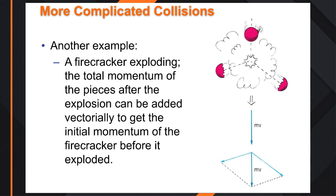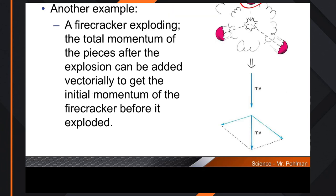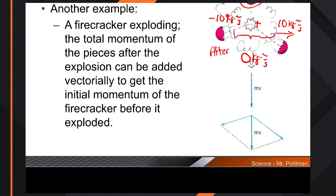Another example of conservation of momentum: instead of two things hitting each other, what if something explodes apart? If you have a firecracker, what's the momentum before it blows up? Zero kilogram-meters per second. And then afterwards, the momentum also has to equal zero. So if one piece has 10 kilogram-meters per second in one direction, the other piece has to be negative 10 kilogram-meters per second in the other direction.